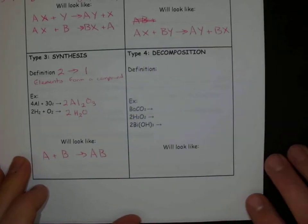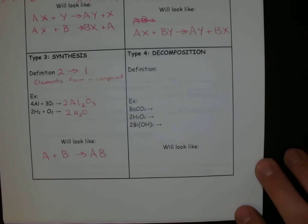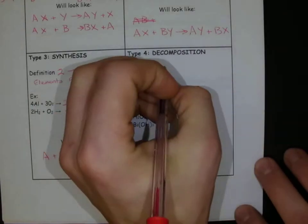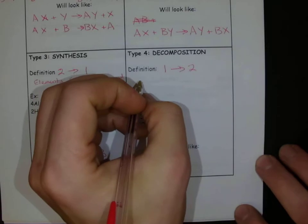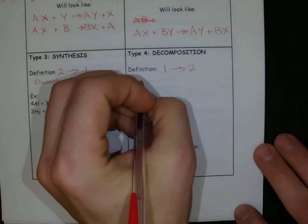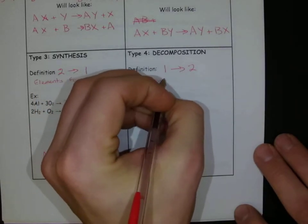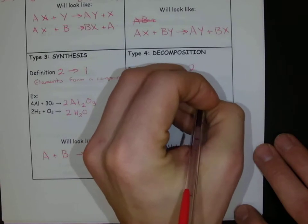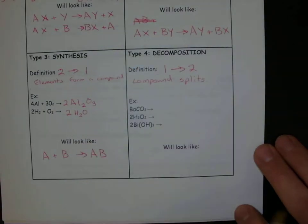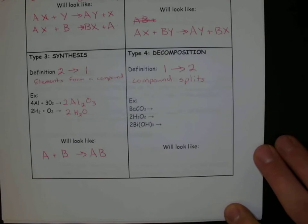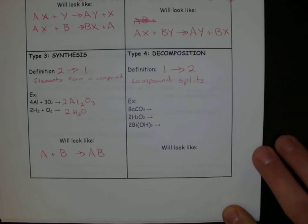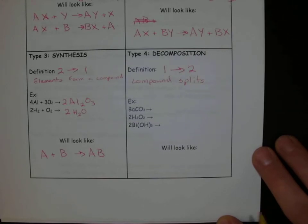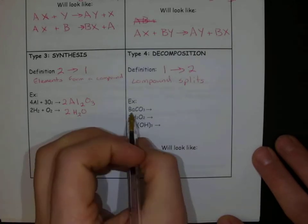This last one here, for today at least, for now, is a decomposition reaction. Essentially, one thing goes to two. A compound splits. So this one is a really hard one because our decomposition reactions, really there's lots of options as to what could form. But there's a few trends that we oftentimes can identify.